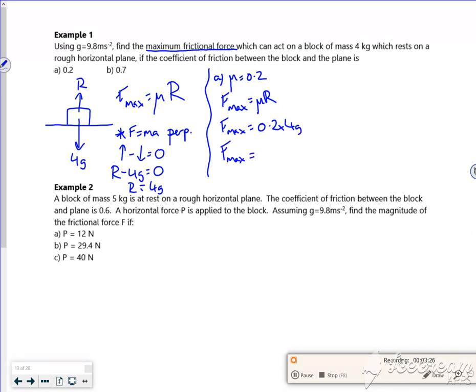So F max, the maximum frictional force I've got, this limiting force, is roughly 7.8 Newtons. So I'll do it again now where it's on a rougher surface because the mu is higher. So it's rougher.